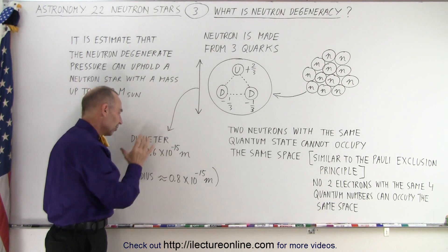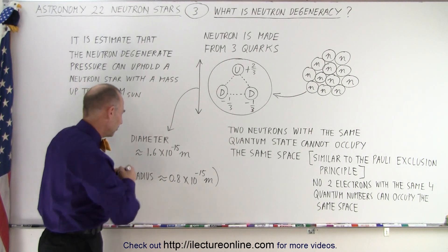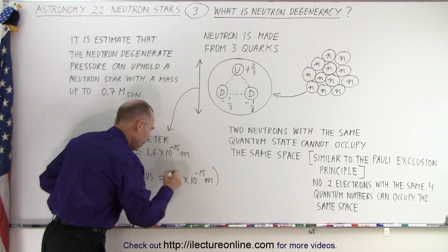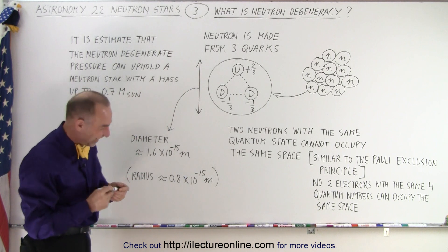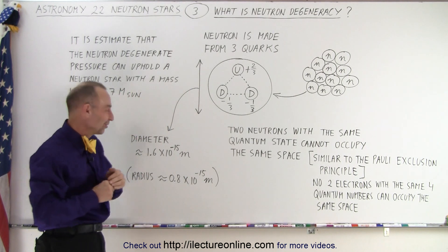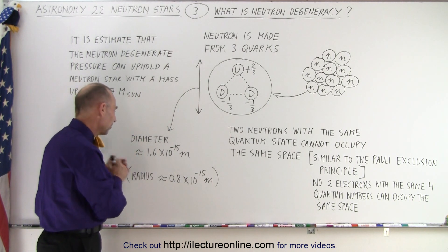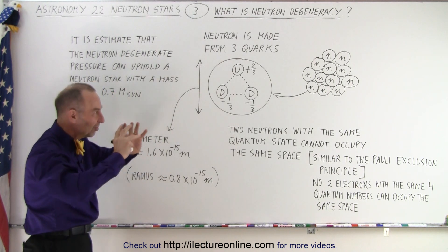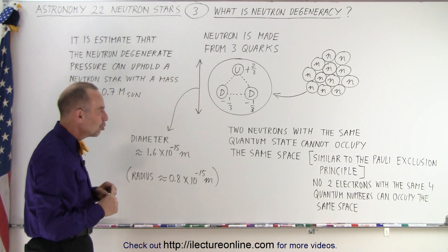The size is around 1.6 times 10 to the 15th meters. Ooh, not 15, that would be a huge one. How about minus 15 meters? That would be a very big neutron indeed. So 1.6 times 10 to the minus 15 meters in diameter, which is the stable size of a neutron.